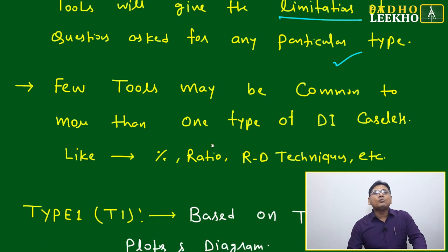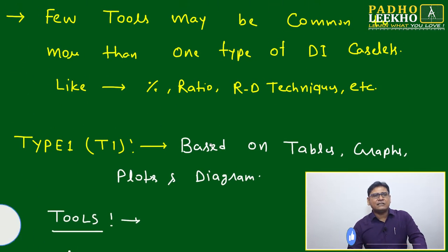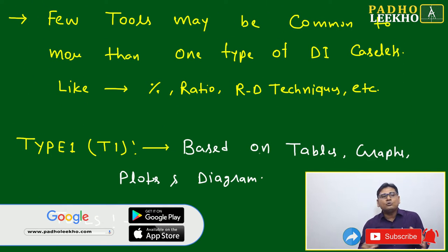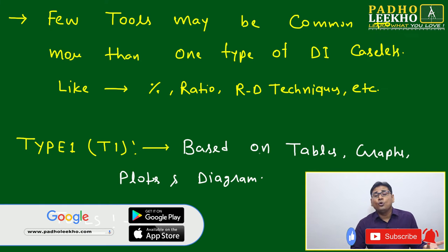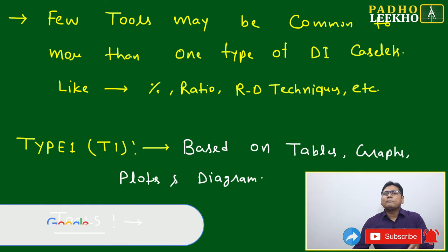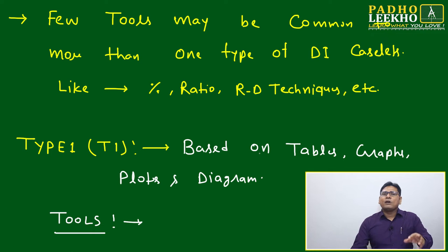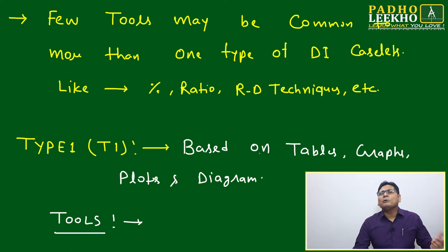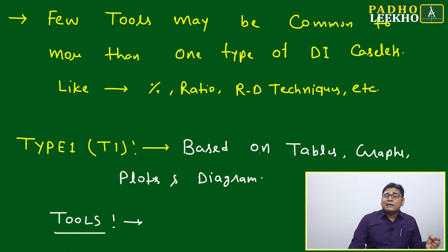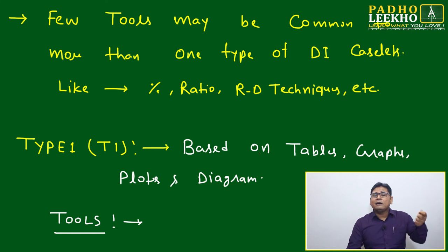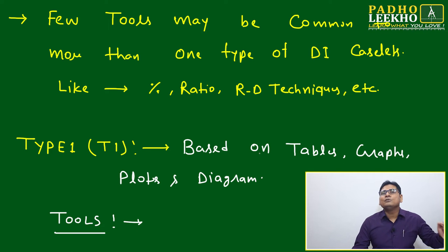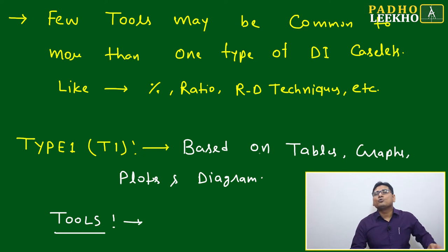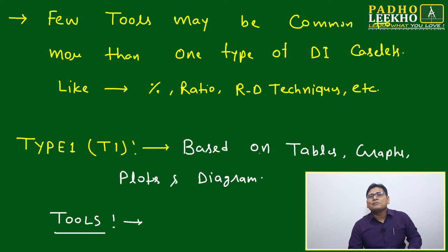Few tools may be common to more than one type of DI case slate — not every type has entirely new tools. Many tools are common across T1, T2, T3, and T4, such as percentage calculation and comparison of ratios. However, there are specific tools, like number patterns and arrangement of numbers, which are used specifically for T5 — games and tournaments — where many questions are based on number arrangements.